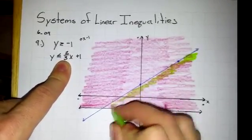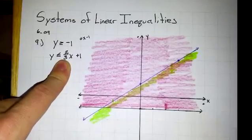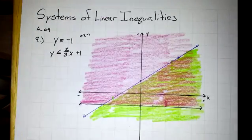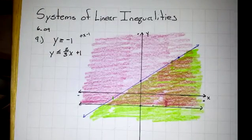And ultimately we're looking for the area that shades both green and red. Now that our shading is done, we can take a look at our final solution set.